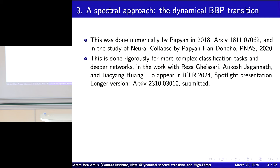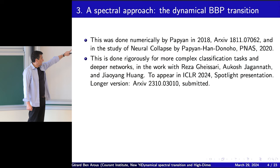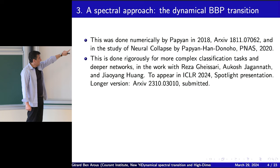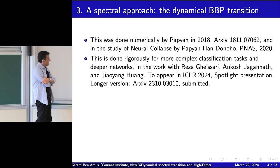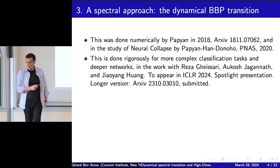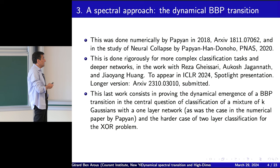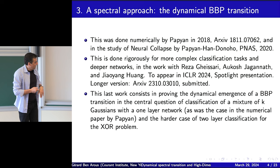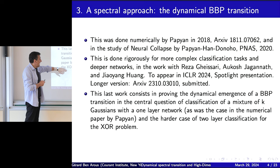We do this rigorously in a paper with Reza Gessari, Okosjagandat, and Zhao Yanghuang — a strong specialist in random matrices. This has been accepted and will be published in a machine learning conference in 2024. The long version is submitted to a math journal and is online. This work consists in proving the dynamical emergence of this BBP transition for the classification of a mixture of K Gaussians with a one-layer network — which is what Papyan did numerically — and also for the two-layer XOR problem.